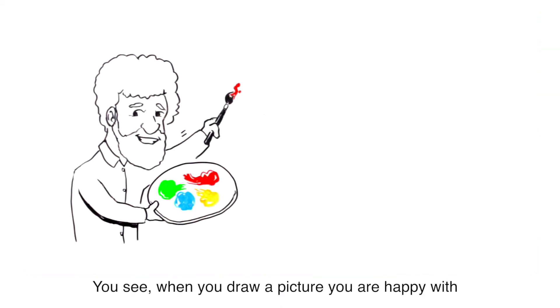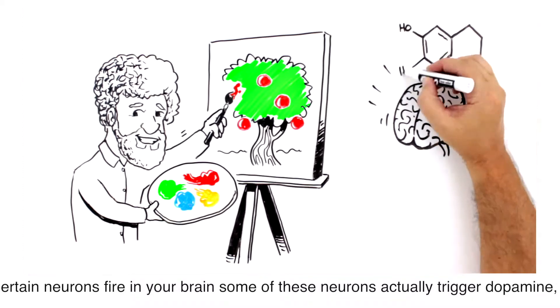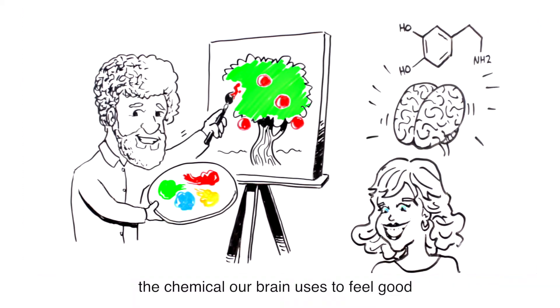You see, when you draw a picture you're happy with, certain neurons fire in your brain. Some of these neurons actually trigger dopamine, the chemical our brain uses to feel good.